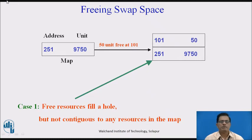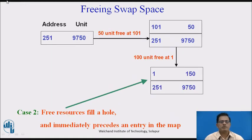Now we will see how freeing swap space occurs via the kernel. The kernel first assigns the physical address and then the logical units that reside on the map. Initially the address is 251 and 9750 logical units are available. Then the kernel frees 50 units at address 101, and the existing address fills a hole at 251 with 9750 units, but it is not contiguous to any resources in the map. Next the kernel frees 50 units and then 100 units at the same address, so the new address occupied on the swap device becomes 1 at 251 and 150 at 9750.